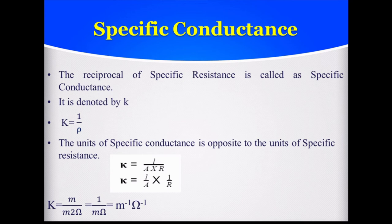Now, specific conductance. It is simply the reciprocal of specific resistance. Specific conductance is denoted by K (kappa), and K = 1/ρ, that is 1 divided by specific resistance. The unit of specific conductance is obtained by taking the reciprocal of the unit of specific resistance. K = L/A × 1/R.